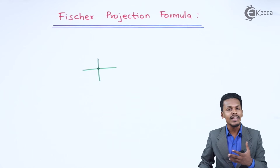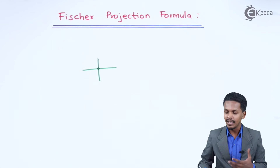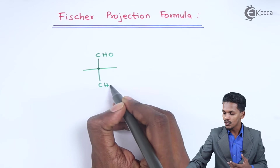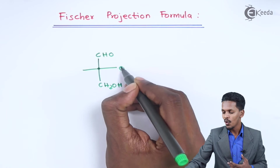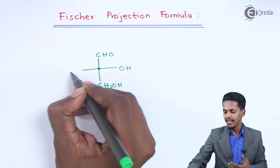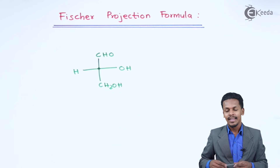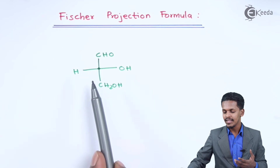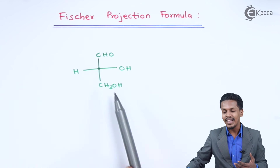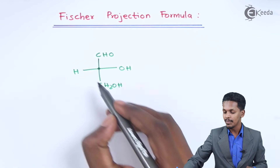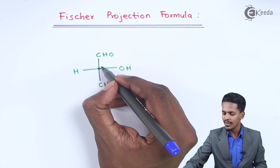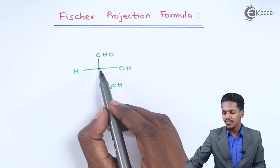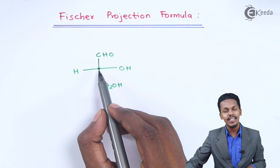For example, if we talk about glyceraldehyde, its structure is CHO, H, OH, OH, and H. The central carbon atom obviously has different valencies, and that's the reason it is a chiral carbon atom — which is why we mark it with an asterisk.